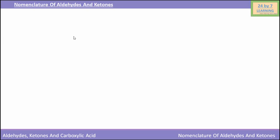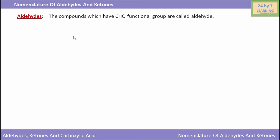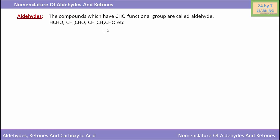So what is an aldehyde? The compounds which have functional group CHO are called aldehydes. For example, HCHO i.e. formaldehyde, CH3CHO i.e. acetaldehyde, and CH3CH2CHO i.e. propanal, etc.